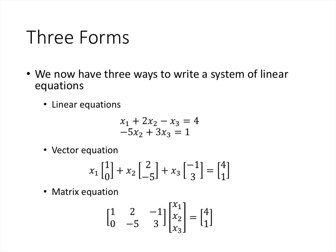This gives us three different ways to write a system of linear equations. The first way is to simply write the equations themselves — that's where we started in linear algebra. We can also write it as a vector equation: we look at the coefficients of x1 in our two equations (say, 1 and 0), the coefficients of x2 (which are 2 and -5), and the coefficients of x3 (which are -1 and 3), each giving a vector.